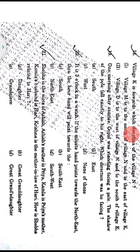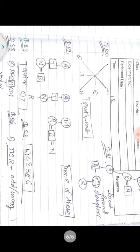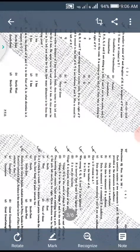Question twenty-one: Shobha is the niece of Ashish. Ashish's mother is Priya. Kamla is Priya's mother. Kamla's husband is Hari Krishna. Hari is the mother-in-law of Hari. How is Shobha related to Hari? Drawing the relationship diagram, the relation is great-granddaughter. Option B, great-granddaughter, is the correct answer.